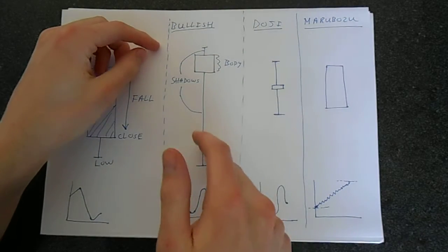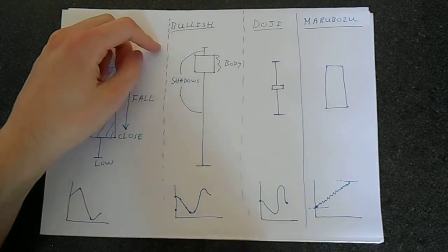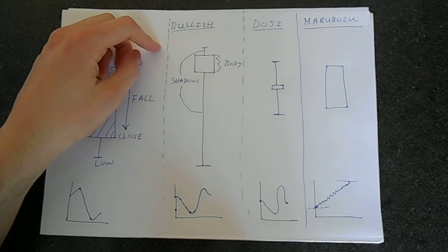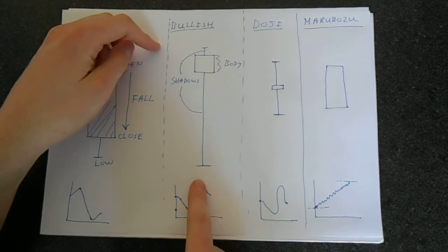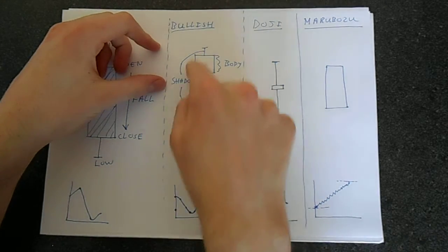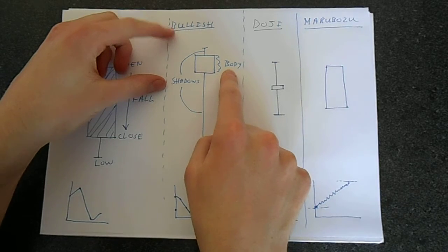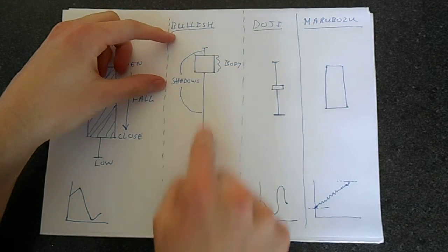This one's often called as a kind of bullish indicator by people into charting. Just another note about the anatomy here, this square part is often referred to as the body, and these lines are referred to as the shadow.